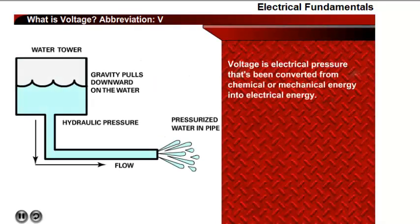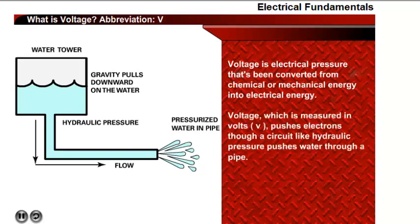Voltage is electrical pressure that's been converted from chemical or mechanical energy into electrical energy, as in a battery or an alternator. Voltage, which is measured in volts, pushes electrons through a circuit and is similar to how hydraulic pressure pushes water through a pipe.